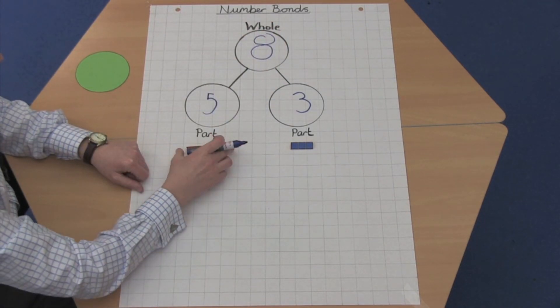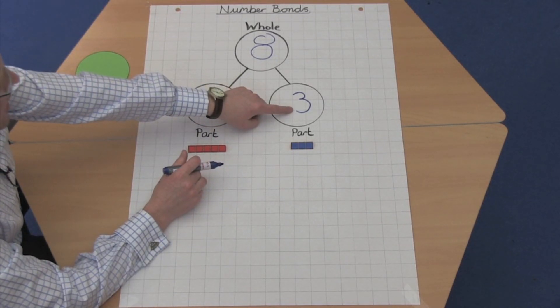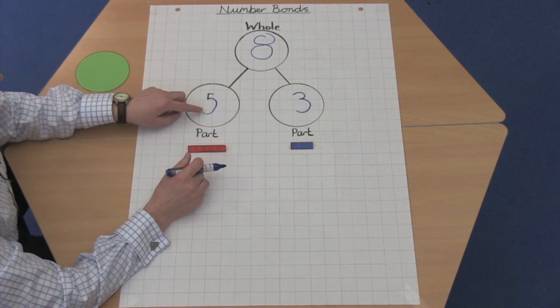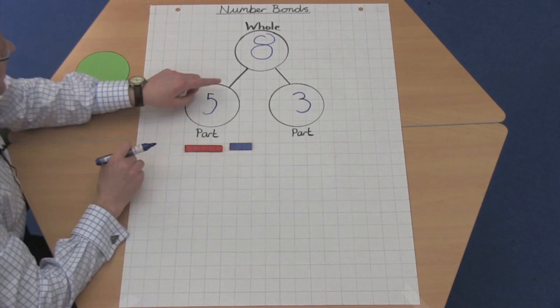Children can learn that these go in any order as well. So we can start with the three, we can add the five, and we still get eight.